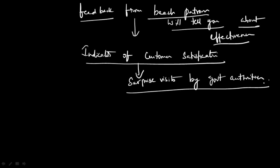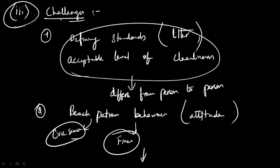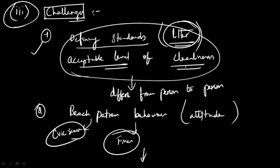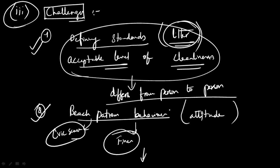The third question asks about the challenges in assessing effectiveness. The first challenge is defining standards — what do you mean by litter? An acceptable level of cleanliness must be defined, but it differs from person to person. Coming to a comprehensive definition of litter, which accordingly defines the desired level of cleanliness, is very difficult and represents the first major challenge.